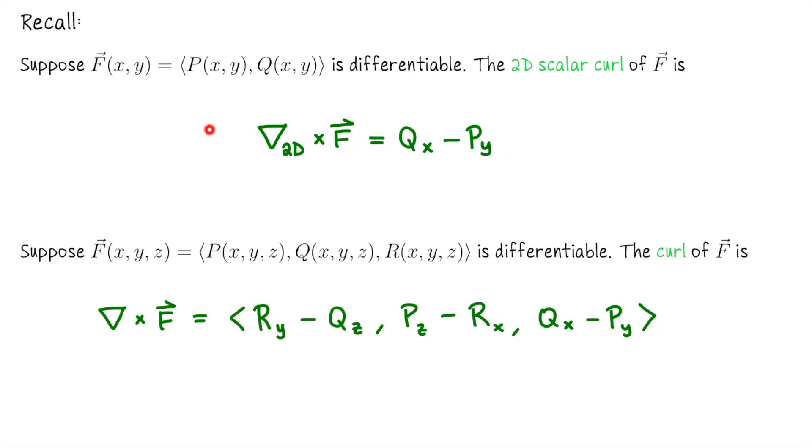This calculation is set up as a cross product so it only makes sense in R3. But notice the third component looks like the 2D scalar curl. In fact, if I took a vector field in R2 and I essentially embedded it in R3 by setting its third component to be 0, then the curl would be 0, 0, dQ/dx minus dP/dy. So you can see the connection between these two quantities and why I like to think of dQ/dx minus dP/dy as like a scalar curl.